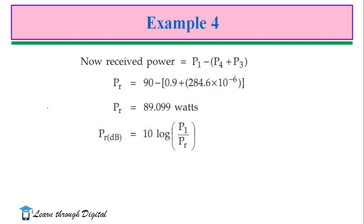So, therefore, Pr is equal to 89.099W. Power received at main arm. That is equal to 0.0436dB.